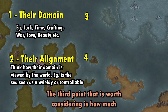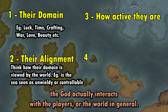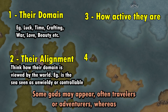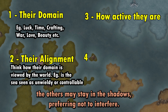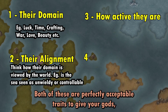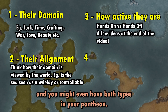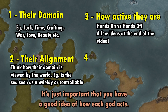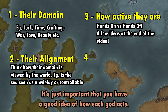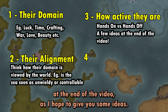The third point worth considering is how much the god actually interacts with the players or the world in general. Some gods may appear often to travellers or adventurers, whereas others may stay in the shadows, preferring not to interfere. Both of these are perfectly acceptable traits to give your gods, and you might even have both types in your pantheon. It's just important that you have a good idea of how each god acts. We'll come back to the ways gods can influence a campaign at the end of the video.